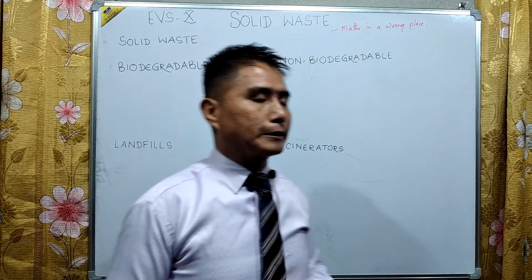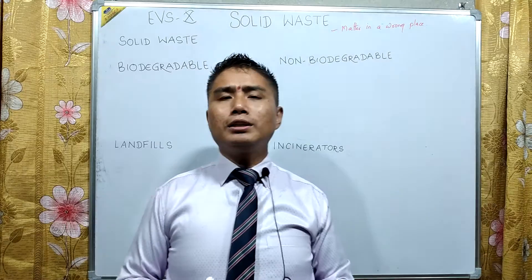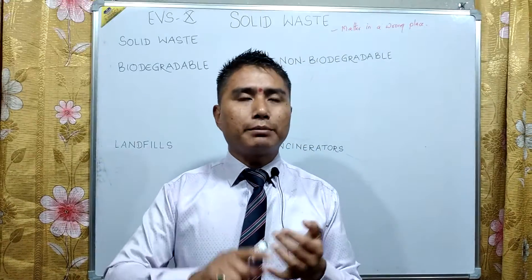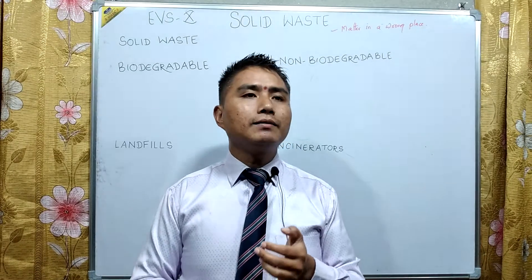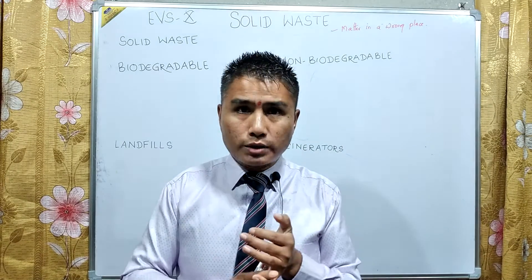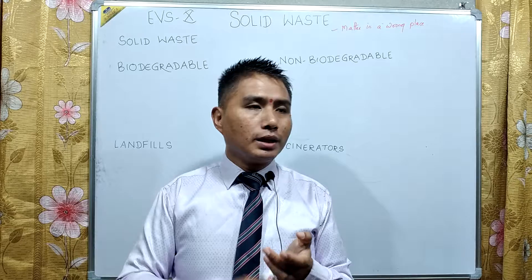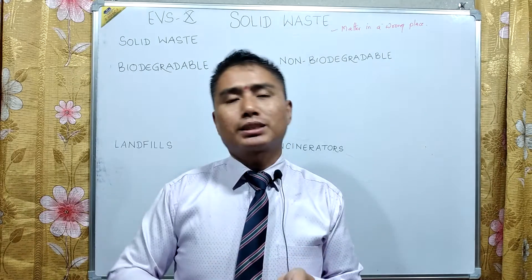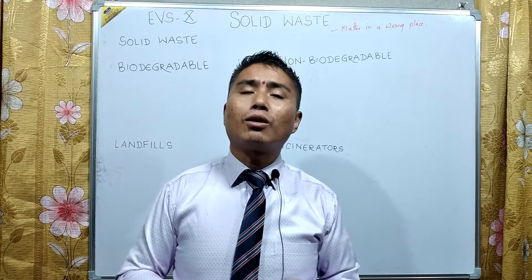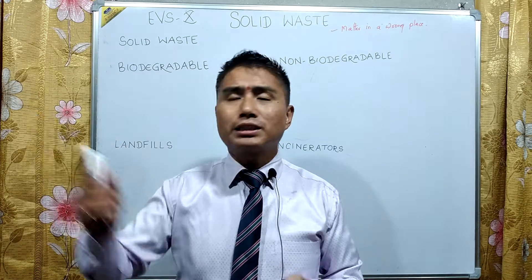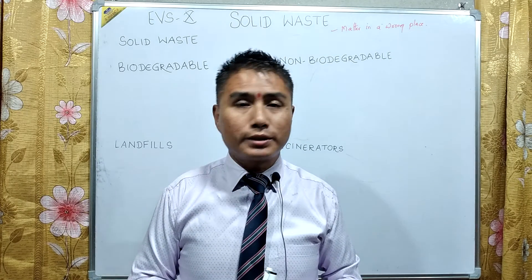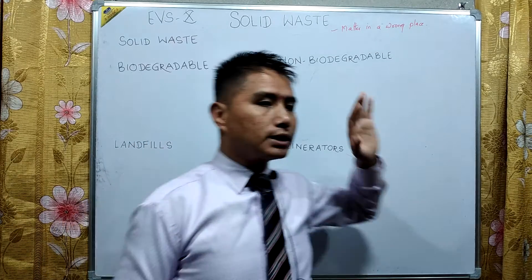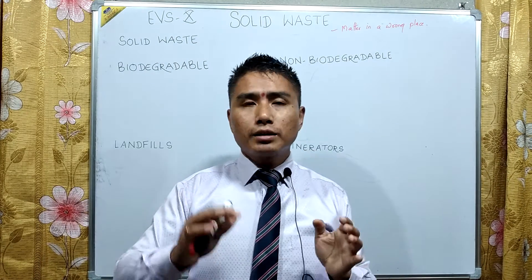Now let us discuss solid waste. Solid waste is whatever waste is not in a liquid state — waste that can be handled by hand and is solid. For example, paper waste is solid, metal waste is solid, plastic waste is solid, e-waste is solid, kitchen waste is solid, and industrial and factory waste are all solid.